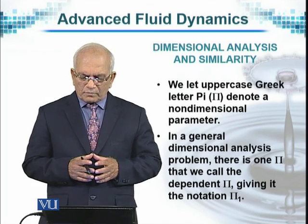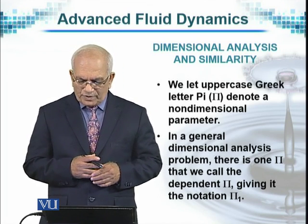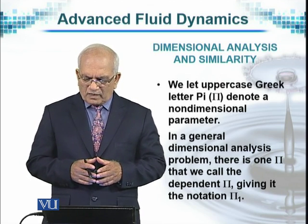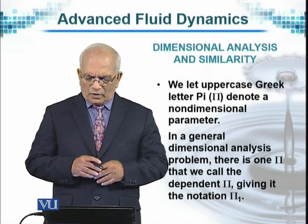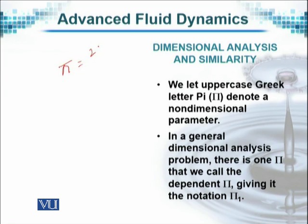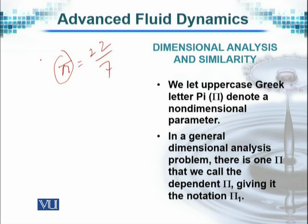One of them is known as Buckingham method or Buckingham rule. And for that, we let uppercase of Greek alphabet Pi—you know that the number pi, which is the ratio 22 by 7, is denoted by Greek alphabet pi, this is the small one. The capital Pi is shown as this, and this is what we are mentioning here. The capital Pi, we let the uppercase of the Greek letter Pi denote a non-dimensional parameter. In general dimensional analysis problem, there is one Pi that we call the dependent Pi, and giving it the notation Pi 1.